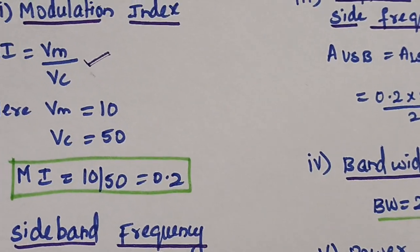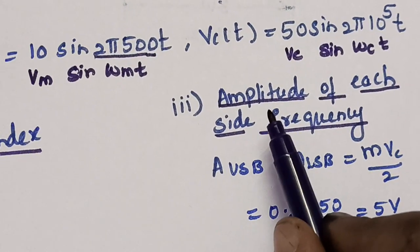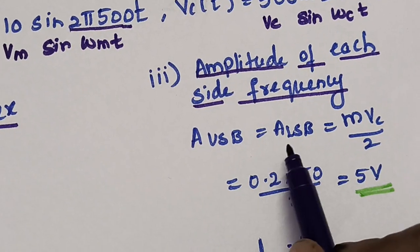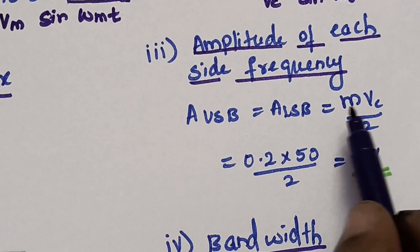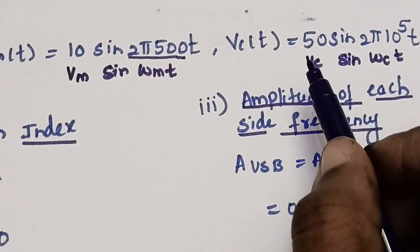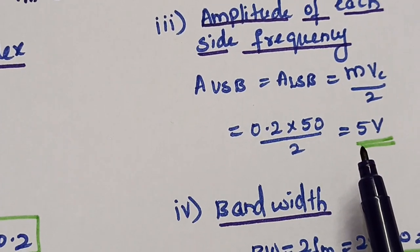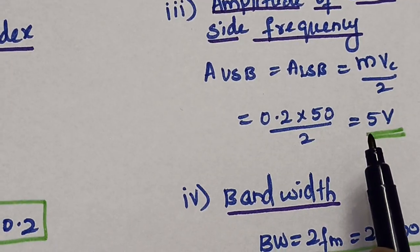Next is the amplitude of each side frequency. The amplitude of both upper and lower sidebands is the same and is given by m·vc/2. The modulation index is 0.2 and vc is 50, so the amplitude is 0.2 × 50 / 2 = 5 volts. Both upper sideband and lower sideband amplitudes are 5 volts.